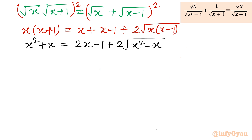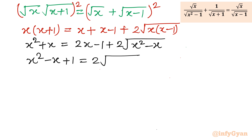Expanding x times (x+1): x times x gives x squared, x times minus 1 gives minus x. Collecting all non-radical terms to the left-hand side: x squared + x minus 2x minus x plus 1, which simplifies to x squared minus 2x plus 1, equals 2·square root(x²-x).